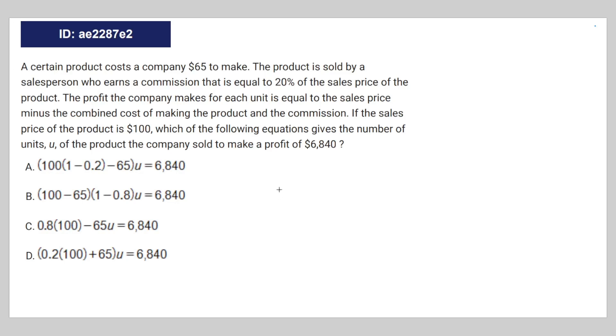Okay, a certain product costs a company $65 to make. The product is sold by a salesperson who earns a commission that is equal to 20% of the sales price of the product.